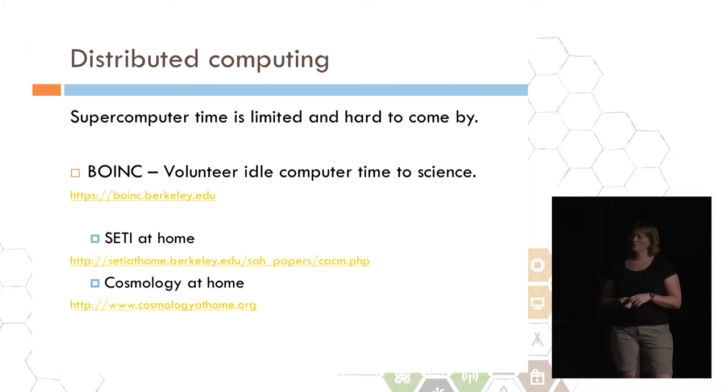Finally, distributed computing has become a big thing. I mentioned I used a million hours of supercomputer time for my thesis. That's great, but it's actually limited. There aren't that many supercomputers in the world, and it's hard to get the time. You have to propose for it, and you have to wait. There's something called BOINC, written at UC Berkeley. Essentially, it allows everyone in the world to volunteer their idle computer time for a science project that they find interesting. The most famous one that many of you probably know of is called SETI at Home. That was a screensaver that came out in the early 2000s, and it allowed the SETI project to process their radio data. Another more recent one is Cosmology at Home. I have links to both of these projects here if you're interested. The Cosmology at Home project actually uses your computer to simulate different models of the universe. That's kind of cool.